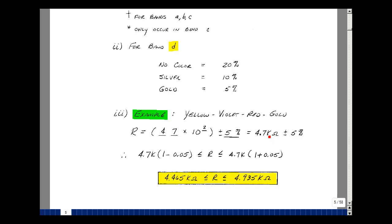In other words, I could take this nominal value and multiply it by 1 minus 0.05, and then 1 plus 0.05, and I get 4.465k and 4.935k. In other words, if you were to measure this resistance with a fairly accurate instrument, the value would fall between these two values.